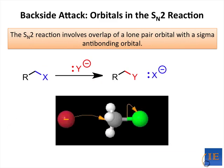Now that we've seen all the players in SN2, let's explore the action a little more deeply. We said that it's a one-step process in which the CX bond breaks as the CY bond forms. If this is the case, then the lone pair orbital on the nucleophile, which we can envision just as a lobe containing the lone pair, must be inducing the CX bond to break.